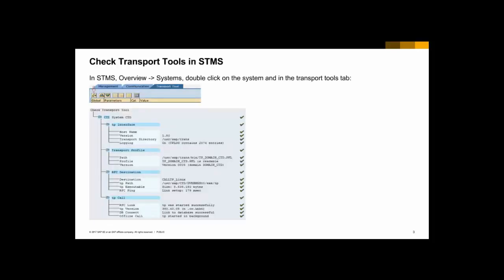Starting with a check in the transport tools tab. In STMS, the first thing we can do to check if everything is alright is to do a check in the transport tools tab. Everything important to the transports will be checked. If one of these checks is not green, then the transport will not work — the export or the import will not work. If something is not green, we need to check in detail what the problem is. For example, if the PP is not connecting with the database, we need to work on this before proceeding with any import. It also does a check on the RFC that calls the PP, so this is really important.